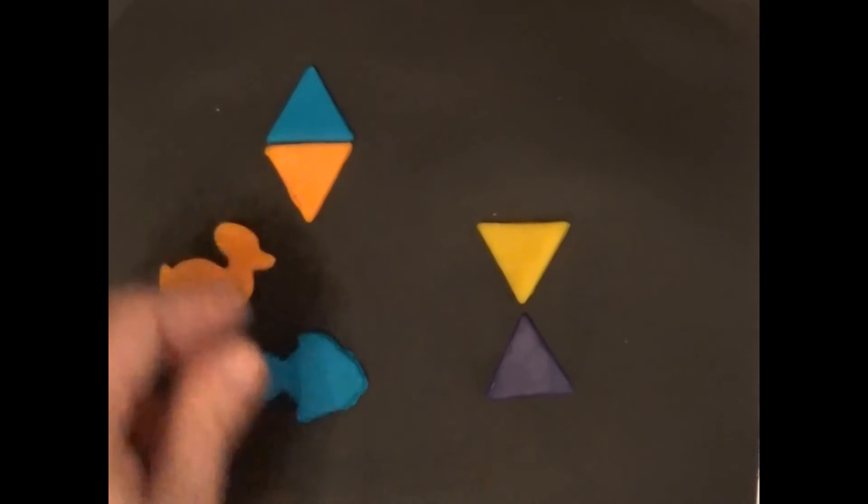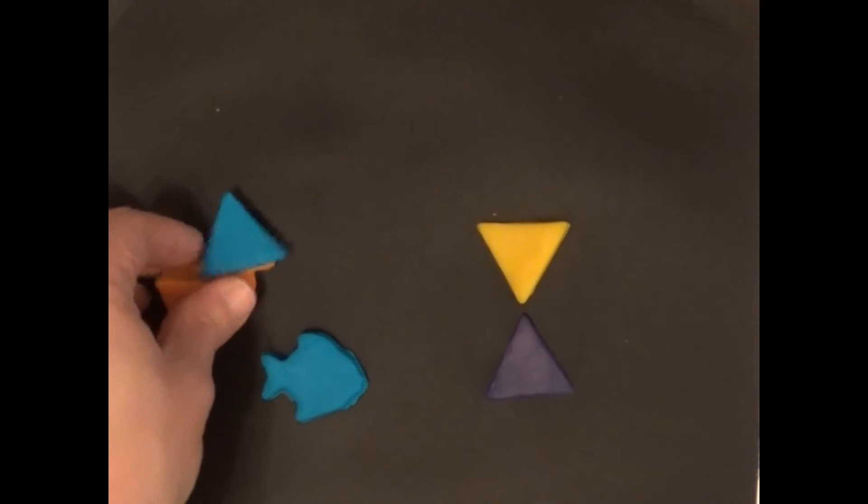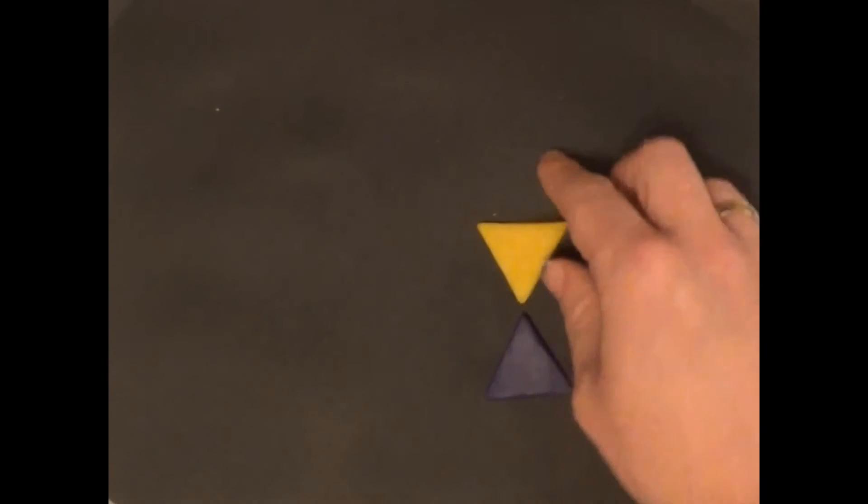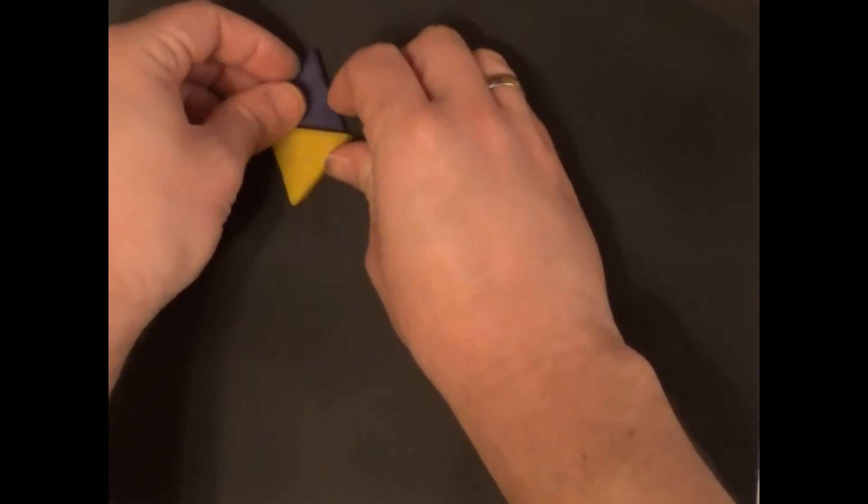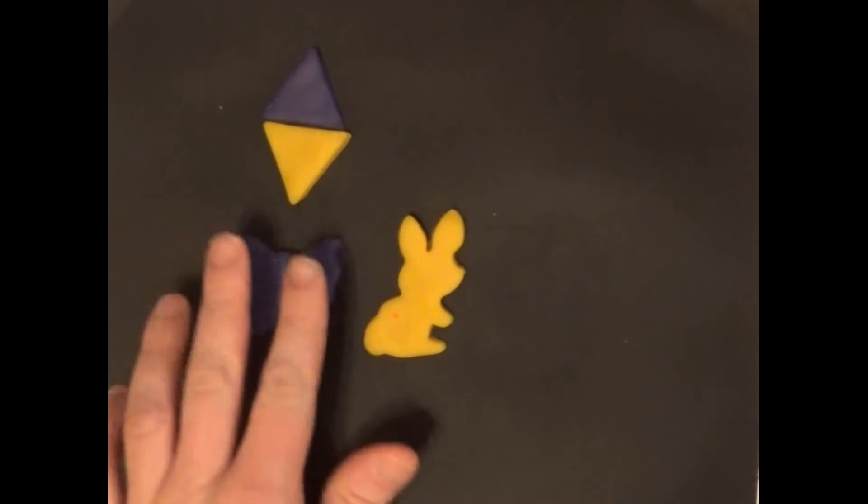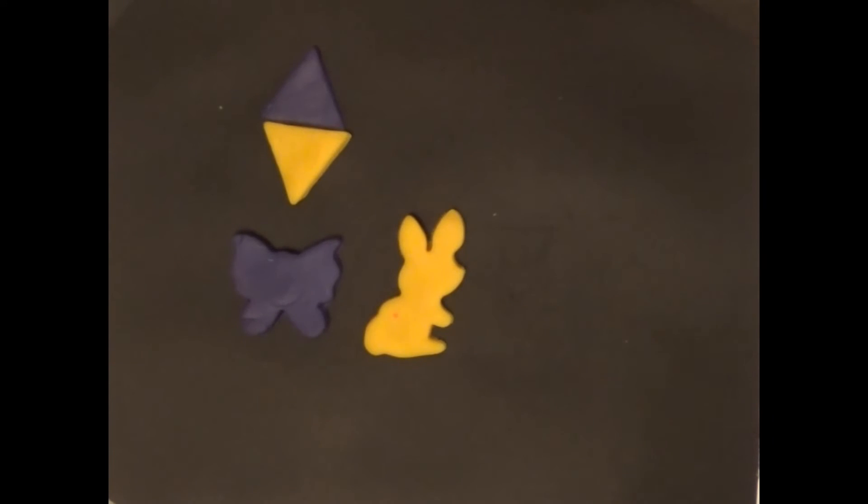And finally, I have yellow and purple. They're on the opposite sides of the color wheel, so they're complementary. We have a yellow bunny and a purple butterfly. They're in the same garden together; they go together so nicely.